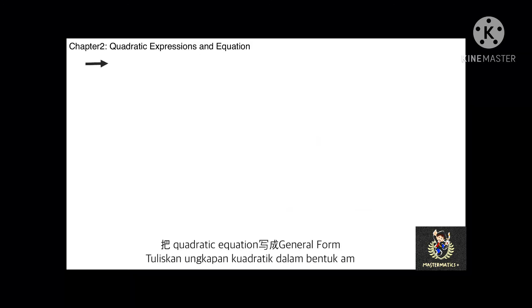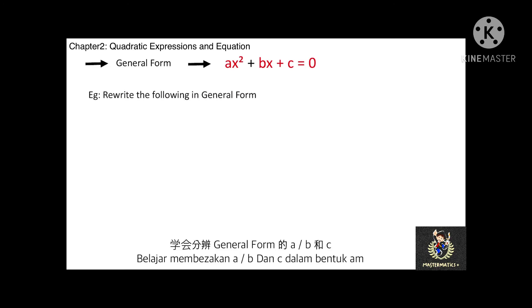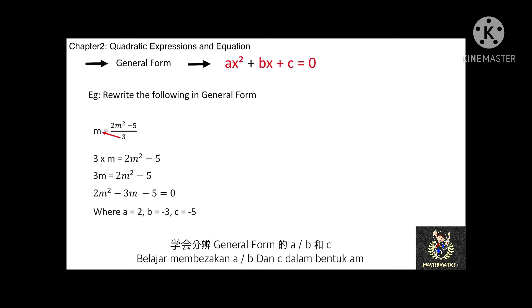Next, we will learn how to write a quadratic equation in general form. The general form of a quadratic equation is ax squared plus bx plus c equals 0, and we will learn how to identify a, b, and c. For example, rewrite the equation m equals (2m squared minus 5) over 3 into general form. First, cross-multiply: 3m equals 2m squared minus 5. The general form is 2m squared minus 3m minus 5 equals 0, where a equals 2, b equals negative 3, and c equals negative 5.